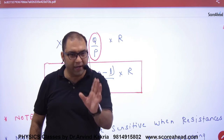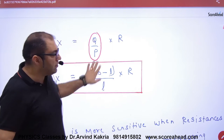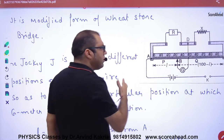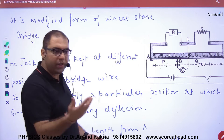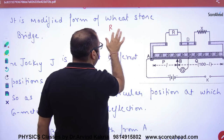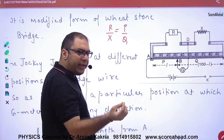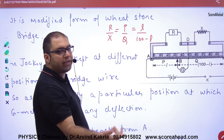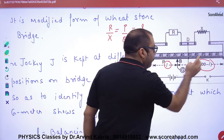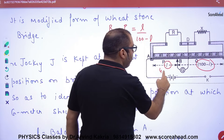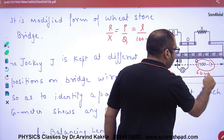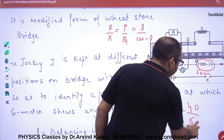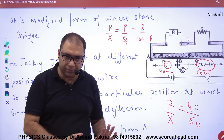To use this in numericals: when the bridge is balanced, R divided by X equals L divided by 100 minus L. Since resistance is proportional to length, P is proportional to L and Q is proportional to 100 minus L. For example, if L equals 40 cm, then 100 minus L equals 60 cm, and R/X = 40/60.